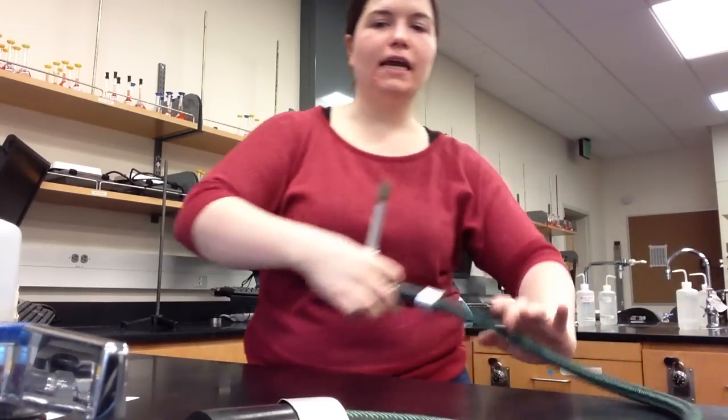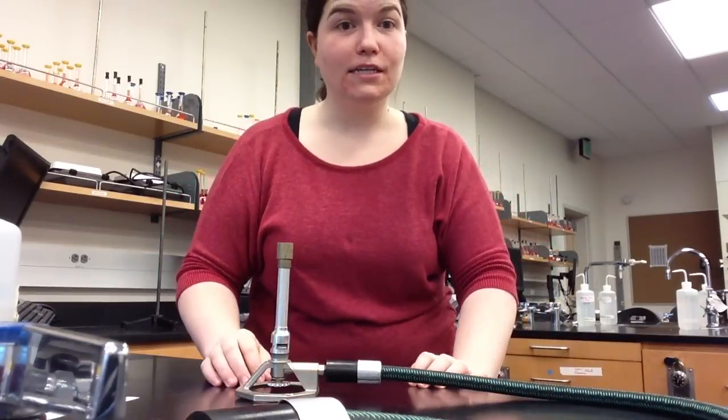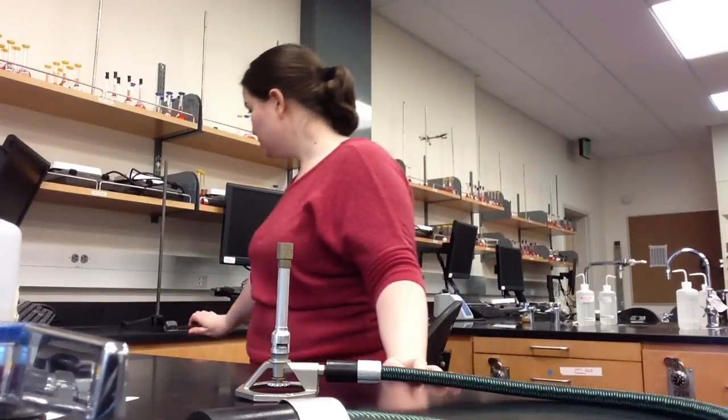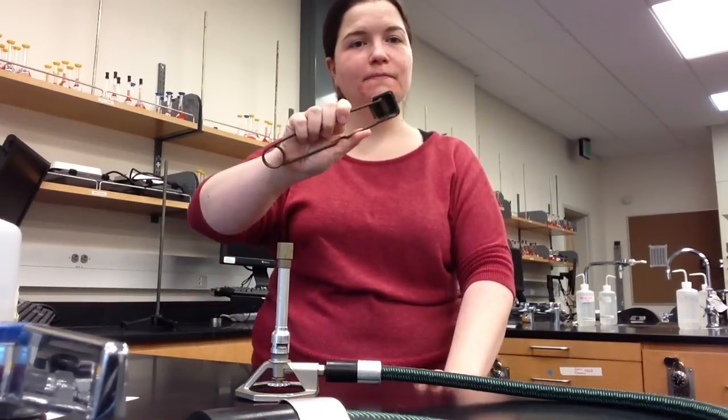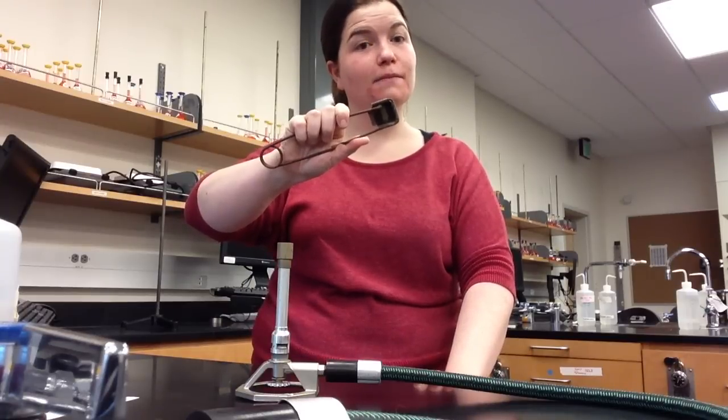Before I can turn on the gas valve, I first need to get a striker out of the lab drawer at the end of the lab bench. This striker will produce a spark which will ignite the gas coming out of the Bunsen burner.